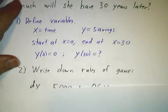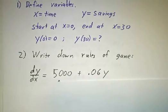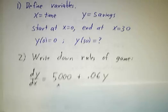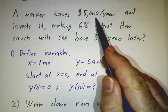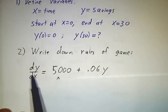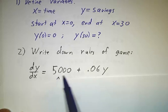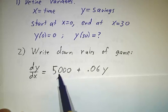The next thing is to figure out what the rules of the game are. That's the differential equation. So what would cause the amount of savings to grow? Well, two things. She's putting $5,000 a year into the bank. So the amount of money is growing at a rate of $5,000 per year because of what she's directly putting there.